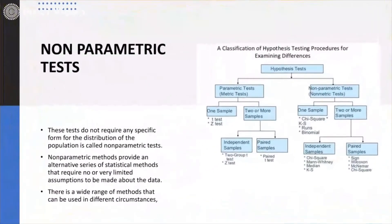Let us try to understand the non-parametric and parametric test. Parametric simply means when you have data with specific values — when you have specific numbers in your hand and you have to deal with the data, you go for the parametric test. 'Para' means numbers, so you go for the parametric test when you have specific numbers.